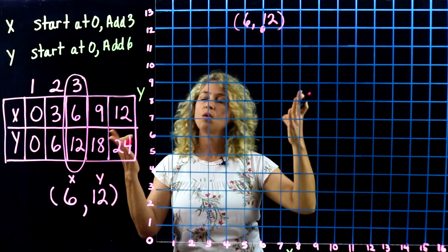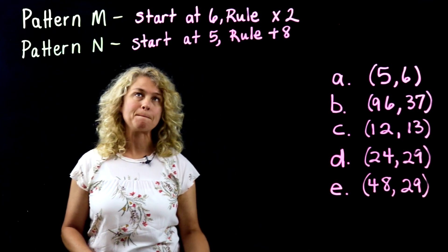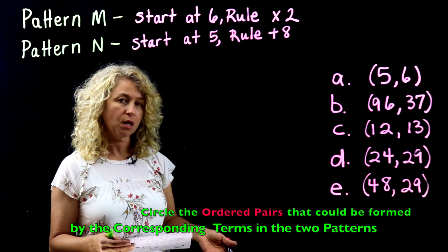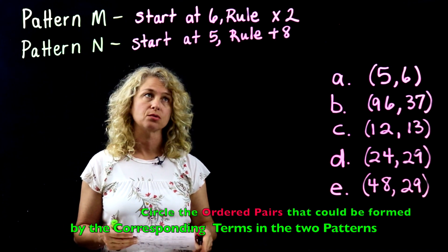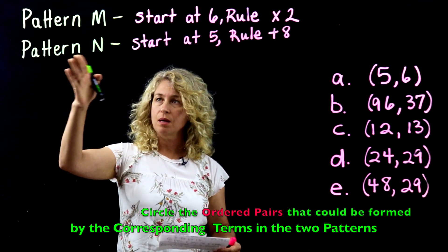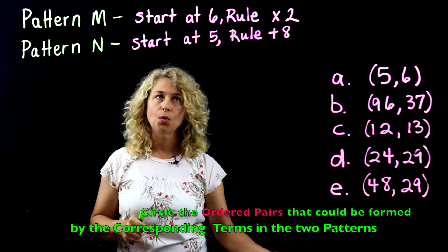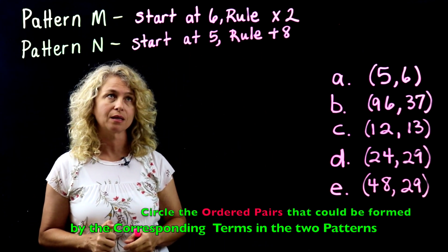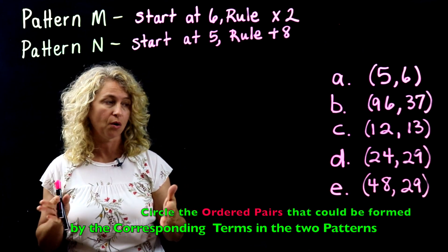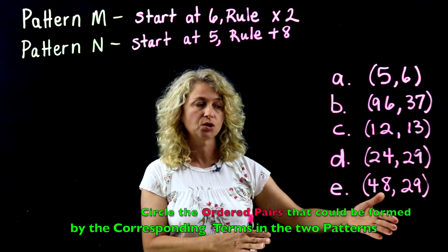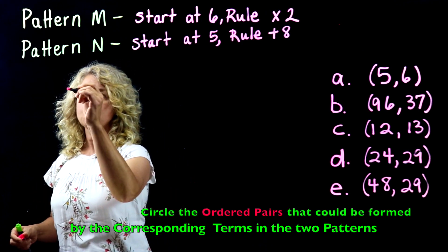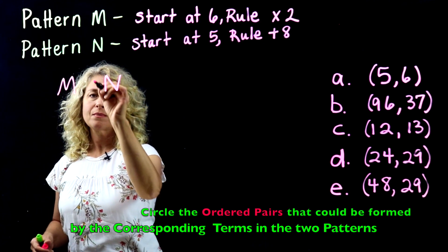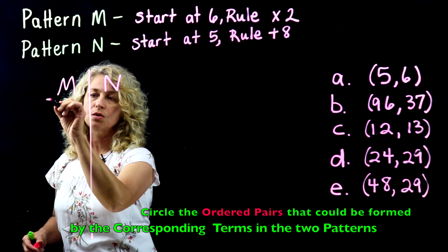Now we have a question: circle the ordered pairs that could be formed by the corresponding terms in two patterns — pattern M and pattern N. We're given the rule and starting point for each, so we have to generate both patterns to find corresponding terms and answer the multiple choice.